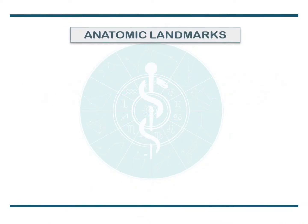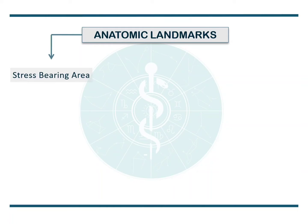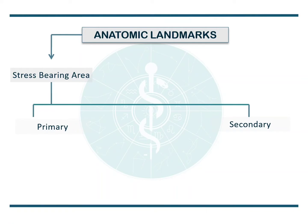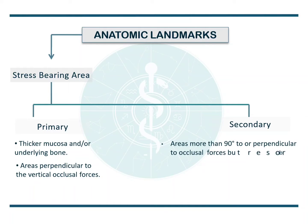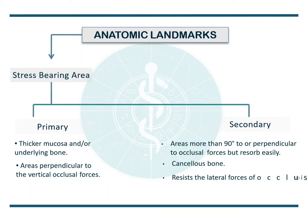GPT-9 describes an anatomic landmark as a recognizable anatomic structure used as a point of reference. It can be classified as the stress bearing area or the support area, which is further subdivided into primary and secondary. The primary stress bearing areas have a thicker mucosa and/or underlying bone, and are areas perpendicular to the vertical occlusal forces. The secondary stress bearing areas are more than 90 degrees to the occlusal forces, resorb easily, are made up of cancellous bone, resist lateral forces of occlusion, and are subjected to resorptive remodeling.